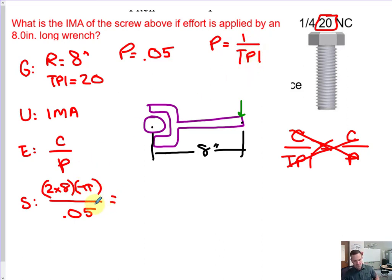So if we do this problem, we get basically 16 times 3.14 is approximately 50.24 divided by 0.05, and we get approximately 1,004.8 as the ideal mechanical advantage.